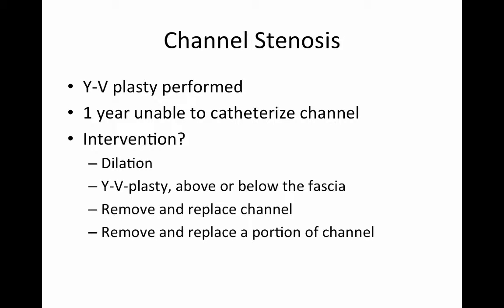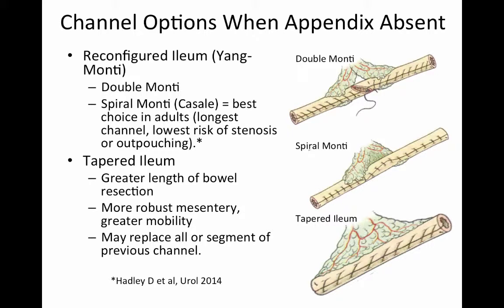A YV plasty was indeed performed for our patient, and it worked well for him for some time, but then one year later he returns unable to catheterize his channel. When dilation has failed and a YV plasty has failed, are we looking at another surgery? Indeed, when these other measures have failed, we're going to have to do a laparotomy and revise his channel, or remove and replace his channel.